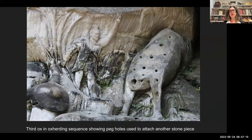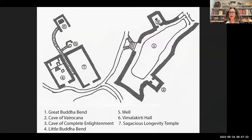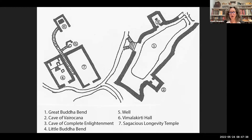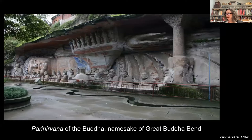So if you've got your location and your materials, then you look at the components — a basic overview of the components of the site. Baudingshan has three basic areas. It's complex because it has distinctly different areas, but those areas sort of interact with each other. Great Buddha Bend (number one), Little Buddha Bend (number four), and the Sagacious Longevity Temple (number seven) are the big areas of the site. Great Buddha Bend is the part of the site that most people know and gravitate towards for obvious reasons.